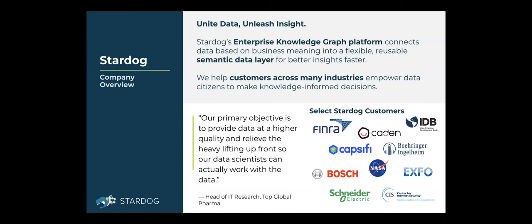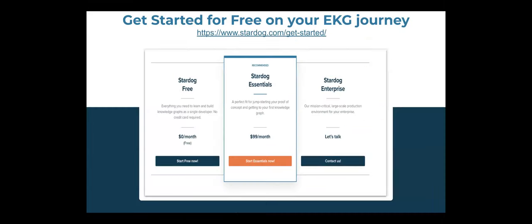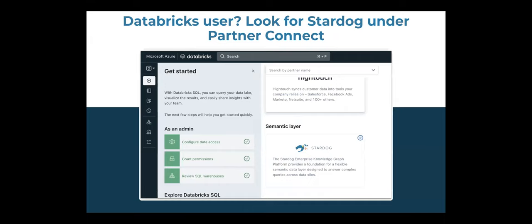We see this across industries — from manufacturing supply chain to financial services to healthcare, life sciences, and pharma — working with data supply chains across silos and trying to make data more FAIR: findable, accessible, interoperable, and reusable. For those interested in learning more about Stardog and how we enable a data fabric or data mesh architecture, you can sign up for free at stardog.com. For Databricks users, you can connect through their partner connect capability, searching the semantic layer category for Stardog.